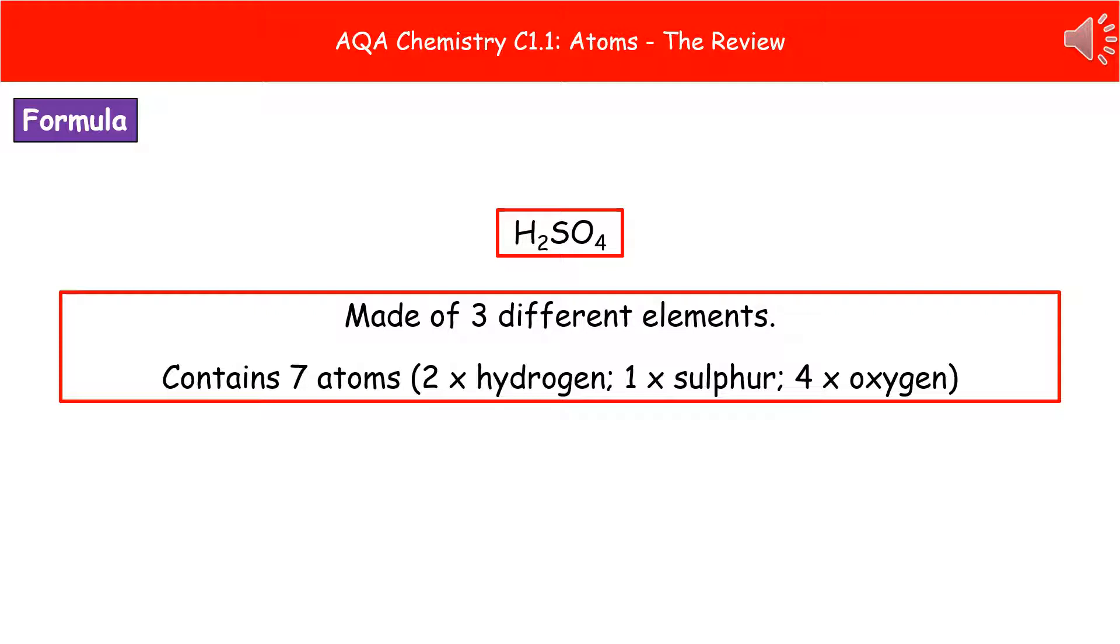We also know it contains seven atoms because if we have a look, there's a little two after the H, which tells us there's two hydrogens. The S is on its own, so one sulfur,